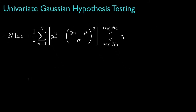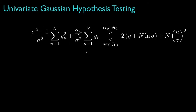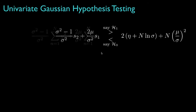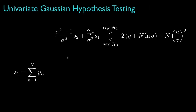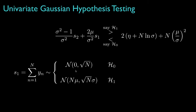If we expand the square inside the summation, and then move all the terms that don't depend on the data to the right-hand side of the inequality, we'd get a decision rule that looks like this. We might rewrite that in terms of two decision statistics, S1 and S2, where S1 is the sum of the observations, which would be a normal random variable with mean 0 and standard deviation square root of N under hypothesis 0, and mean equal to N times mu and standard deviation equal to square root of N times sigma under hypothesis 1.